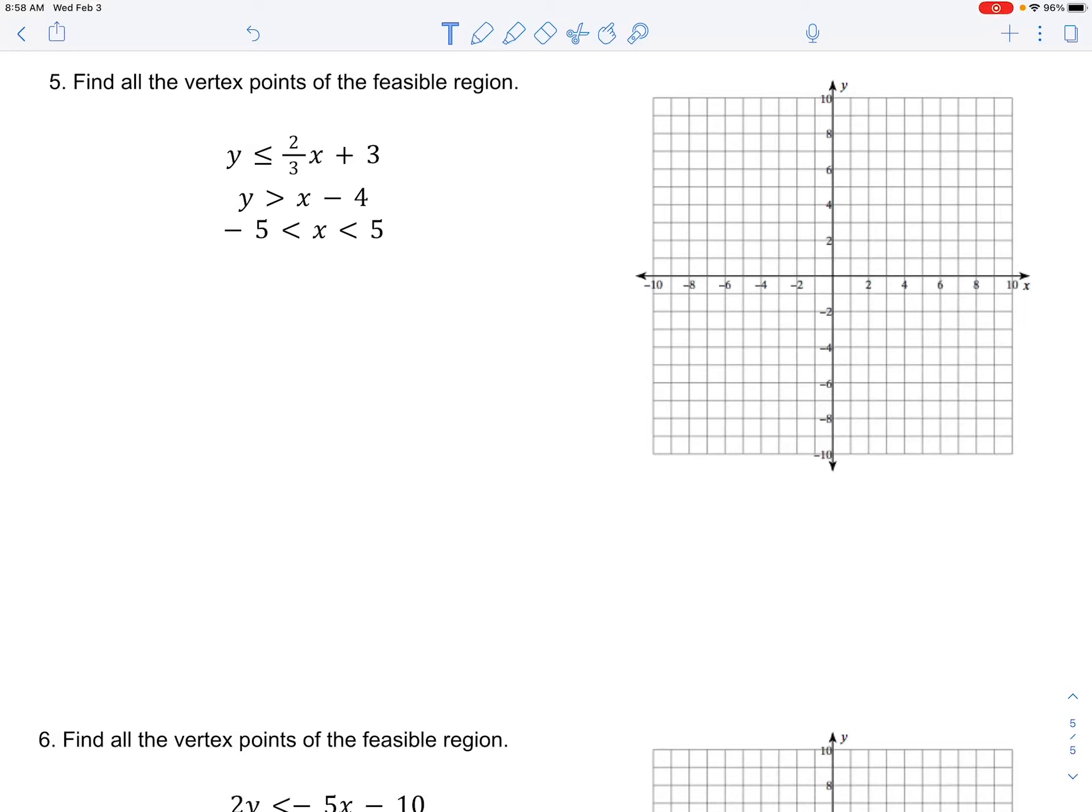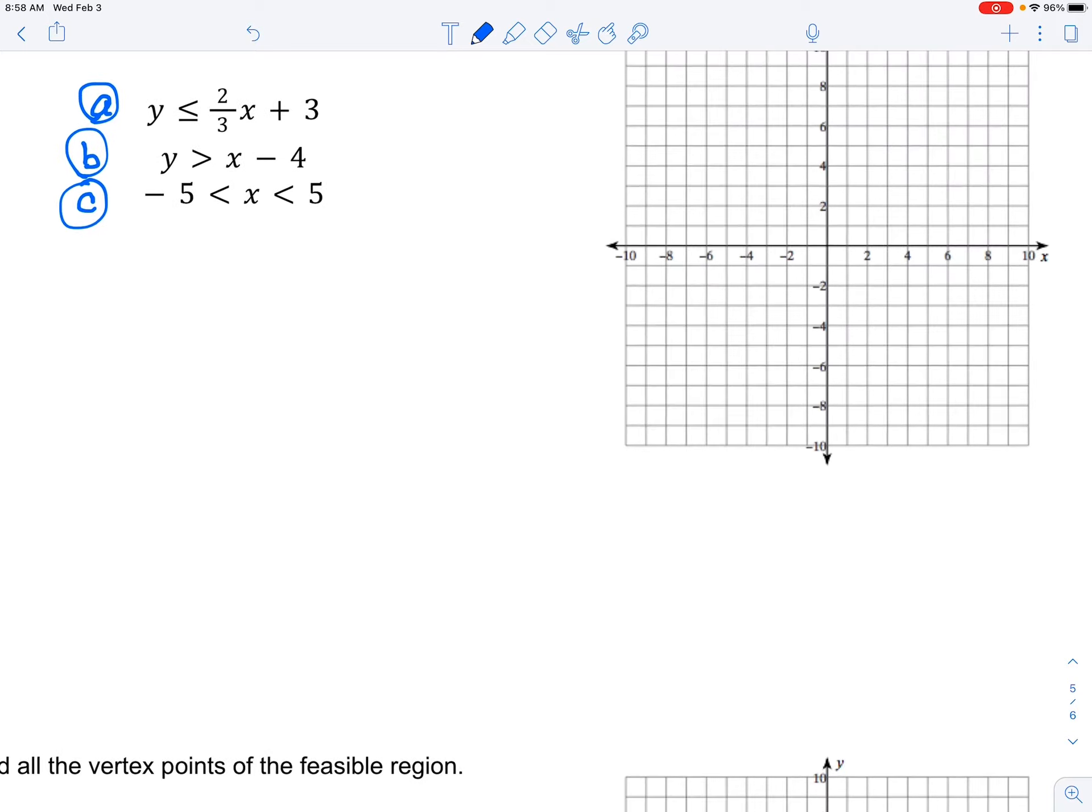All right, here's an explanation for the feasible region for this number 5. What I like to do is, instead of labeling the points, I'm going to label these lines A, B, C. It's going to be pretty busy, so it's good to refer back to them with those numbers. And let's start with line A.